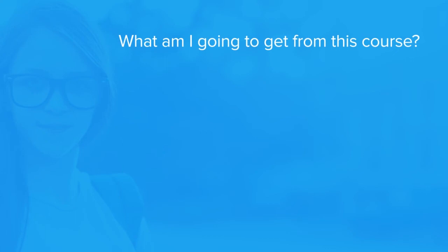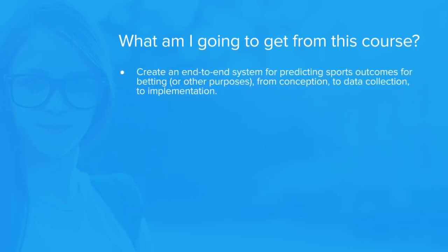The learning outcome of this course is that you learn how to create an end-to-end system for predicting sports outcomes, not just in tennis even if that's the use case, but in pretty much any sport from soccer to basketball. You learn how to do this from the conceptual stage to the data collection stage and finally to the implementation stage. I'm very excited for having designed this course and I hope you're going to join me to learn how you can predict sports outcomes by using Python and machine learning.